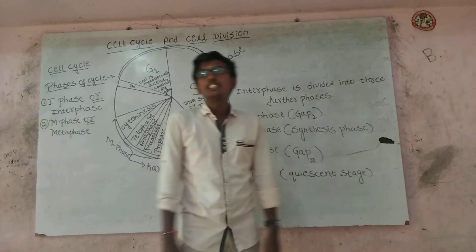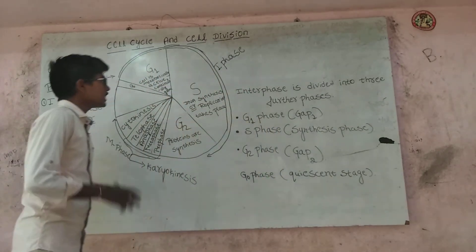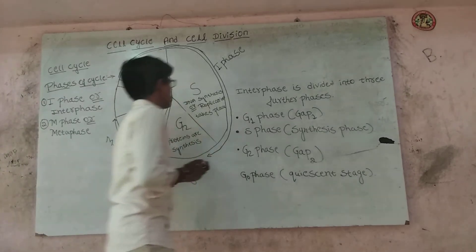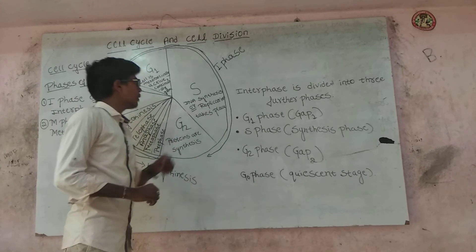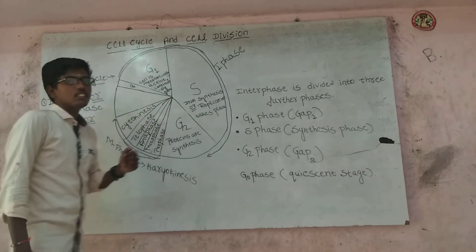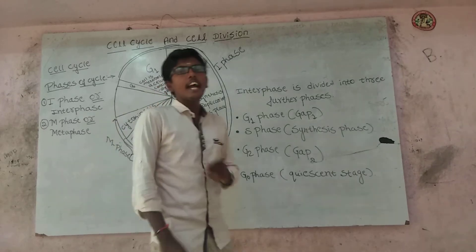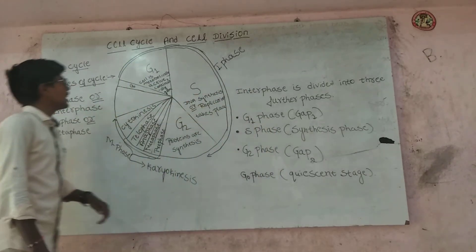What is meant by Cell Cycle? The sequence of events by which a cell duplicates its genome and synthesizes the other constituents of the cell and divides into two daughter cells is called Cell Cycle.